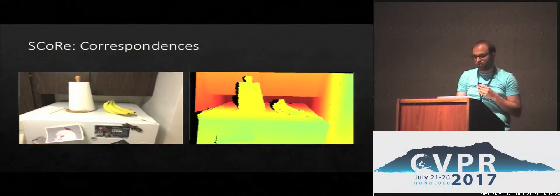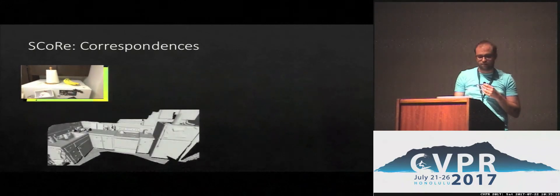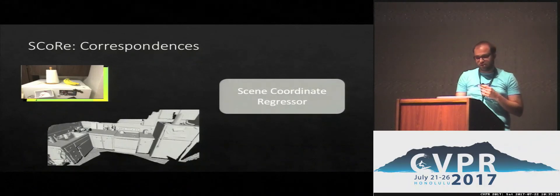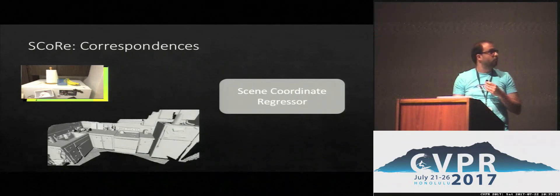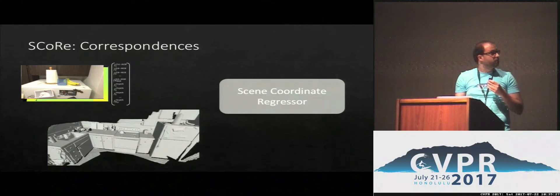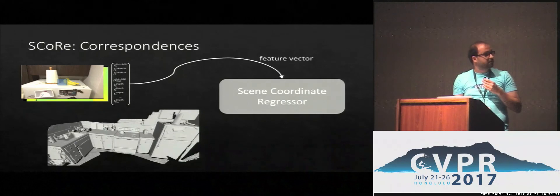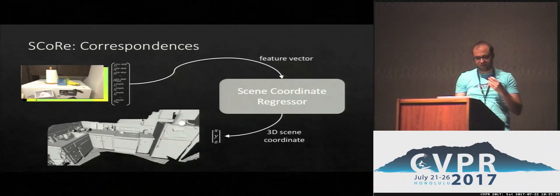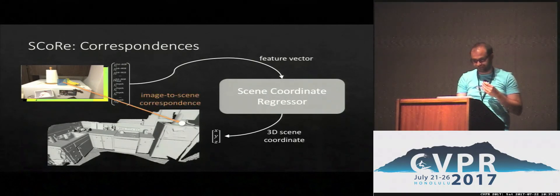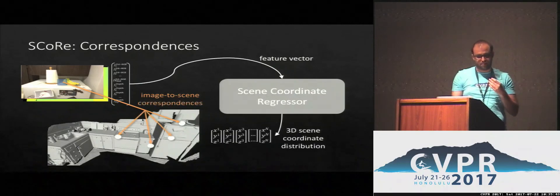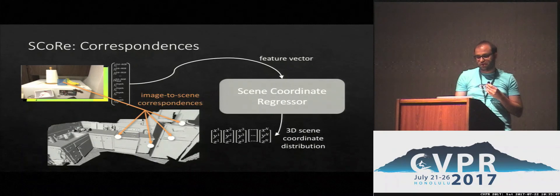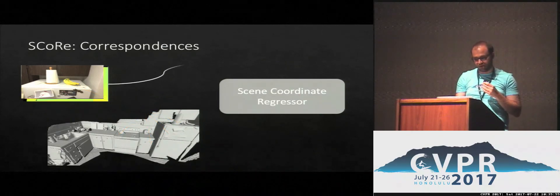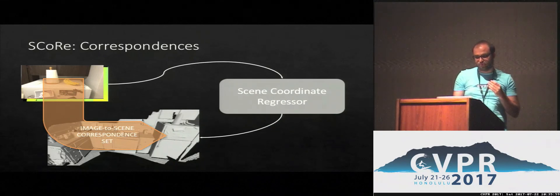Let's look at how SCORE establishes those correspondences. We use an RGBD image pair acquired from a scene. The main component of a SCORE pipeline is a scene-coordinate regressor — think of it as a black box. To estimate the scene-coordinate corresponding to a point in the input image, you compute a feature vector from the appearance of the image around that point and feed it to the scene-coordinate regressor. Out comes the 3D scene-coordinate corresponding to that image point. Recent approaches provide a full distribution of scene-coordinates, and this can be done for any location in the image, giving us all the image-to-scene correspondences needed to compute the pose.